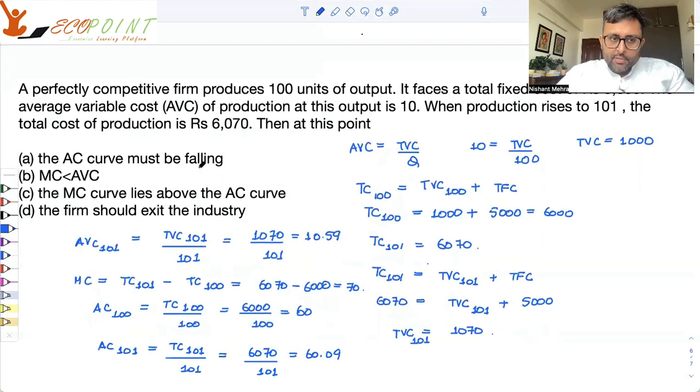The AC curve must be falling. Is it falling? When the output is increased from 100 to 101, AC is increasing from 60 to 60.09. So this is false.